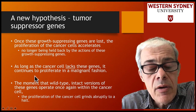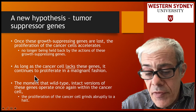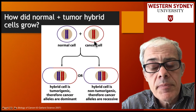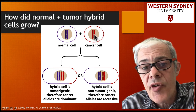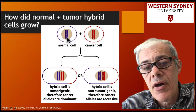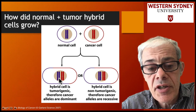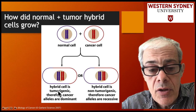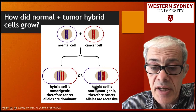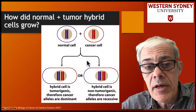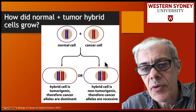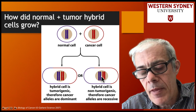Getting back to that fusion experiment: what we were effectively doing was — the cancer cell had lost its brakes. When you merge the cells, the brake function of the normal cell returned the hybrid cell into a normal cell. So effectively, you're putting the brakes back into the car.